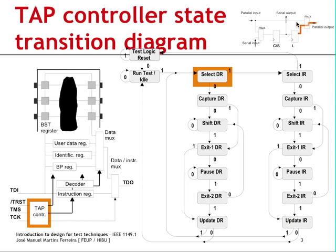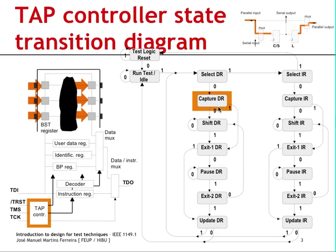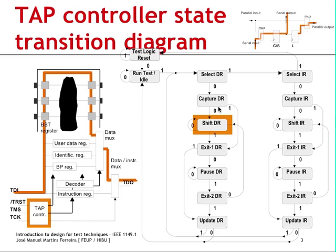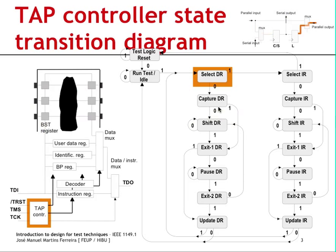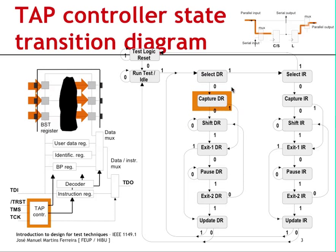Now that we have loaded the new instruction, we continue to shift data register. The shortest path is to go to select data register, then by driving two 0s we go to capture data register and then to shift data register. Observe the operating mode of the boundary scan cell as we go through these two states. When entering capture data register, the input multiplexer is set up as shown, and the boundary scan cells capture what is present at their inputs. This capture operation takes place at the next rising edge of TCK as we leave the capture data register state.